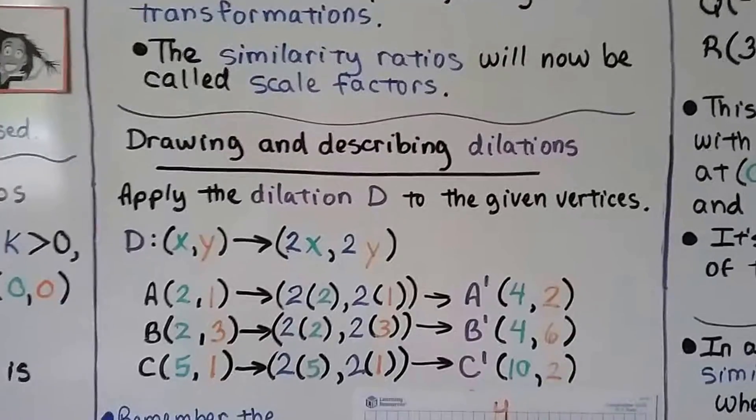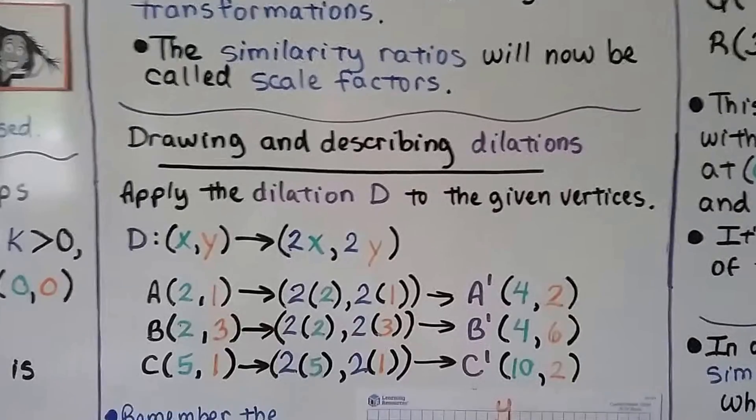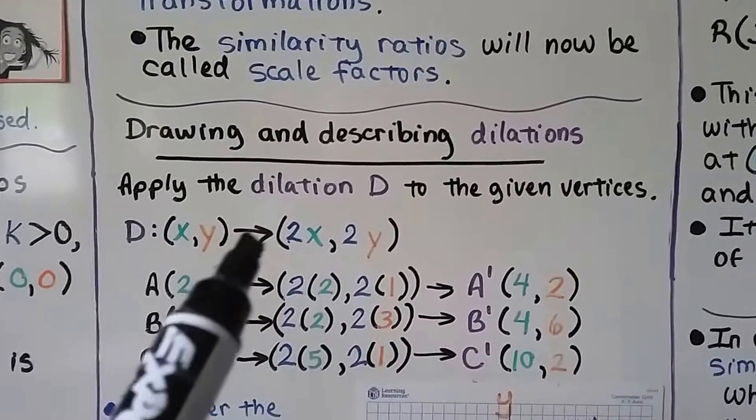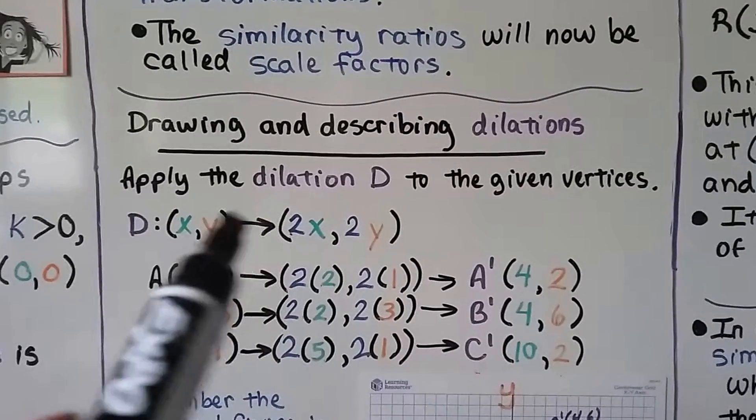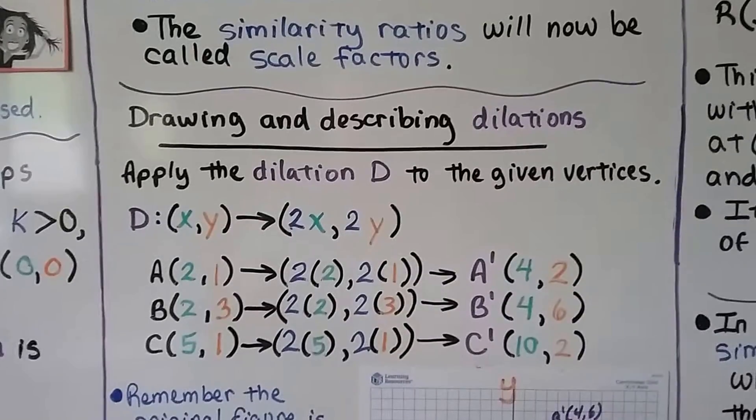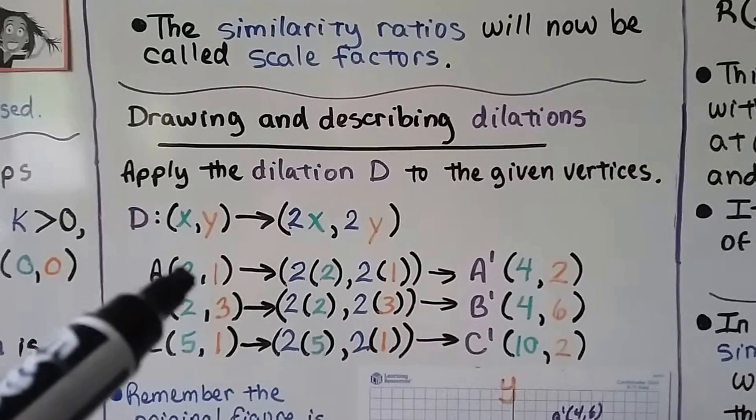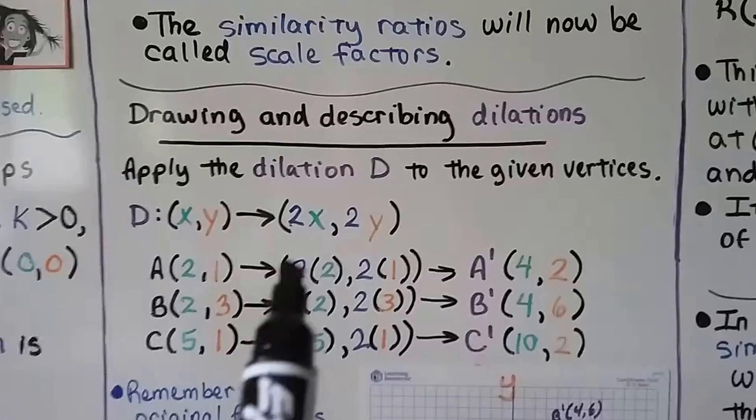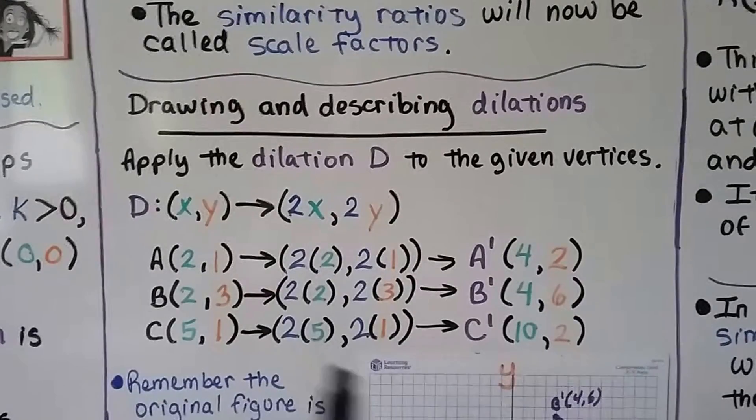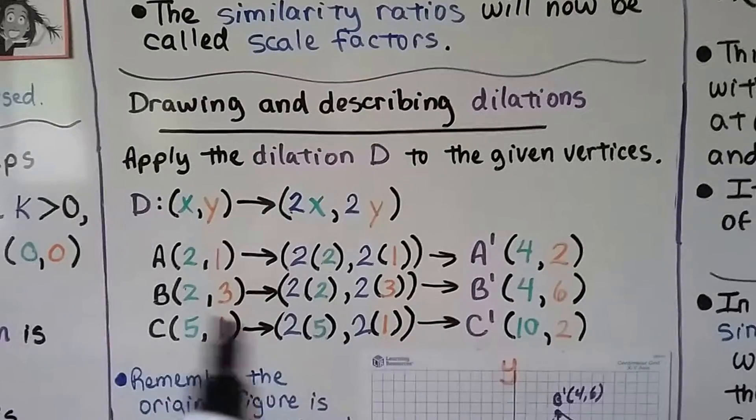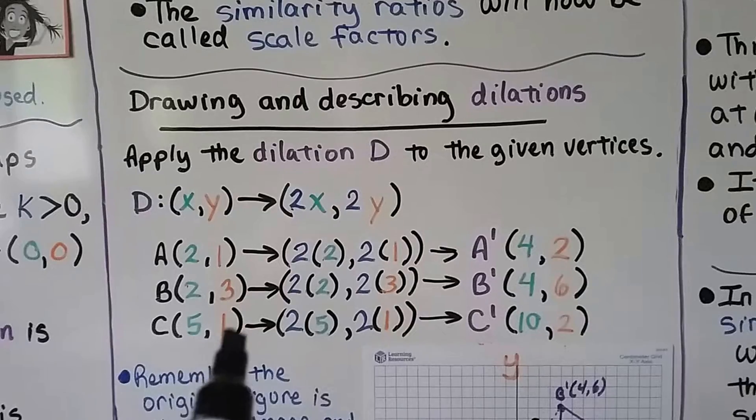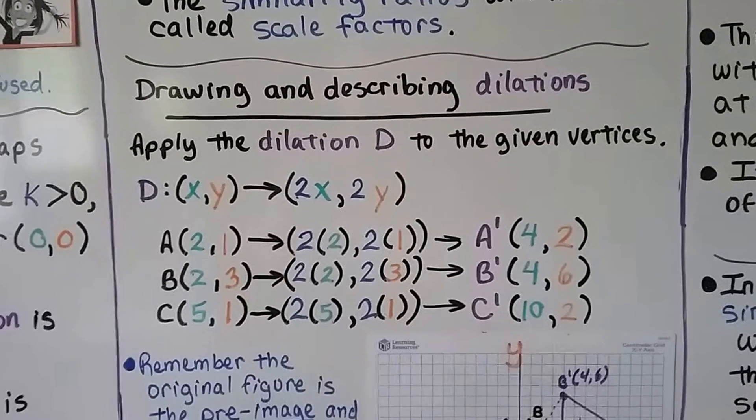So here's drawing and describing dilations. We can apply the dilation D to the given vertices. So we're going to do whatever x and y is, we're going to do a transformation to 2x, 2y. So we have A, B, C. A is (2,1). We're going to multiply the x times 2 and the y times 2 for each one of these. And A prime is going to be (4,2). B is going to turn into B prime, that is (4,6). And C, that is (5,1), is going to be C prime, that's (10,2).